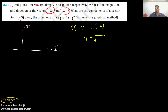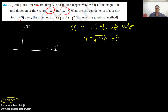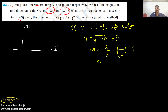To find the magnitude of B, it will be root of one squared plus one squared. The magnitude is one for each unit vector. So you get magnitude of B equals root 2. For the direction, tan θ equals the y-component divided by the x-component, which is 1/1, so θ equals 45 degrees.